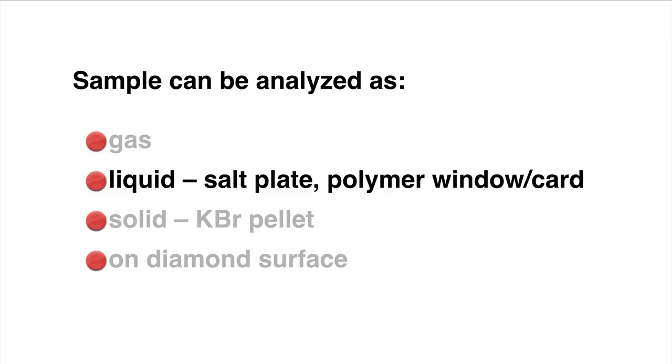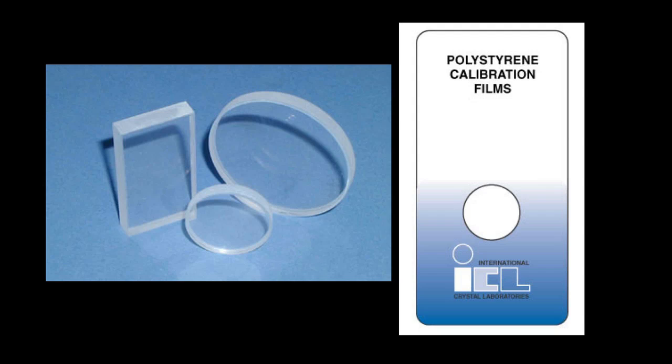One is using what is called a salt plate and one is using what I'll call a polymer window card. Now the salt plate is exactly what it says it is. It is a salt plate. What you're seeing here on the screen on the left are single crystals of sodium chloride. What you do is place a drop of a liquid onto one of these salt plates, then you'll get another one the same size and you put them together like making a cookie sandwich, and you just make a thin film with your sample.